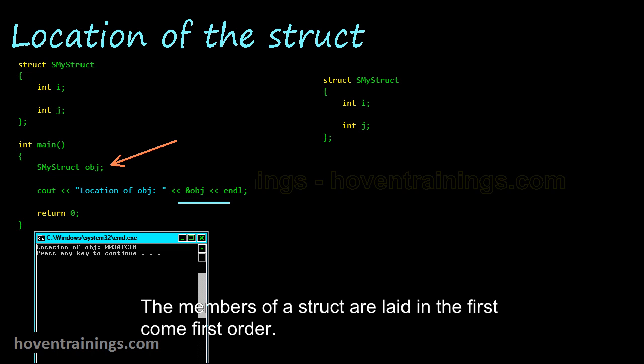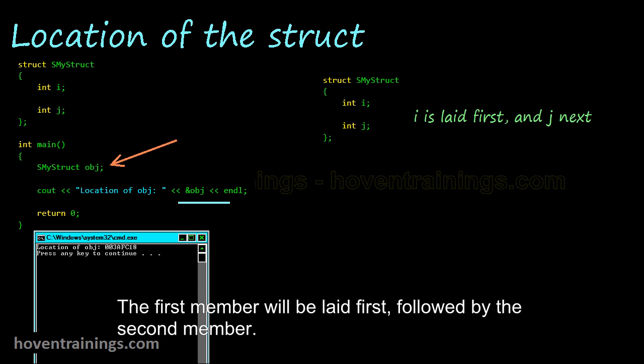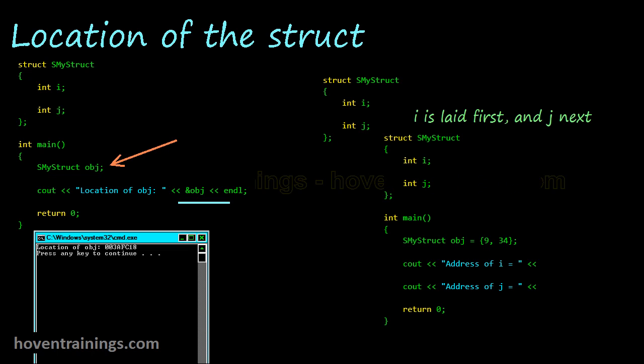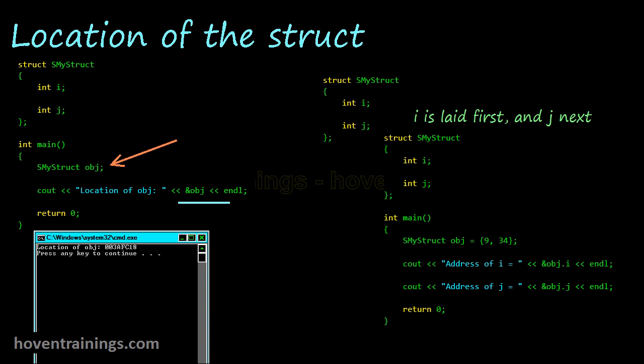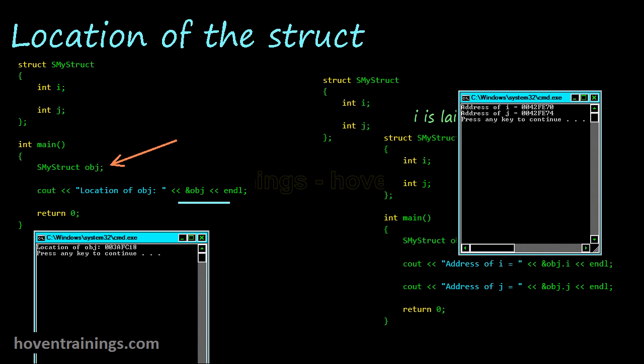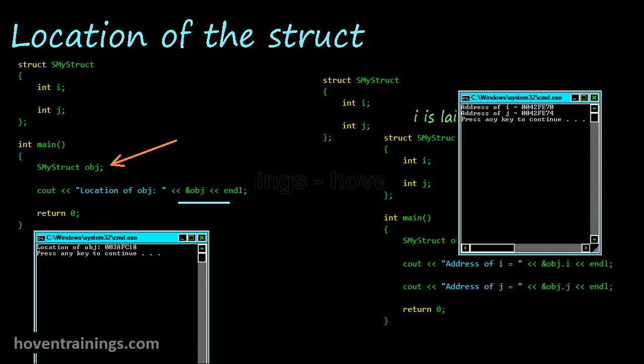The members of a struct are laid in the first-come-first order. The member that appears first is laid first. The first member will be laid first, followed by the second member. In this code a struct is being created and values given to its members. After that the addresses of the members are being printed. You can verify that i is laid first and j after. The ordering is preserved. Secondly, you can also see that i and j are separated by exactly four bytes. They share a common wall.